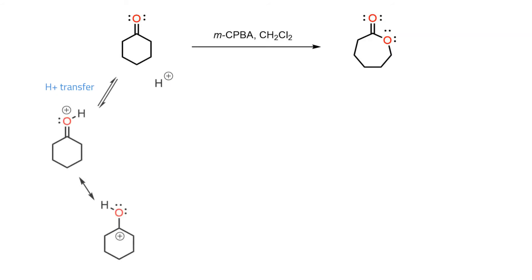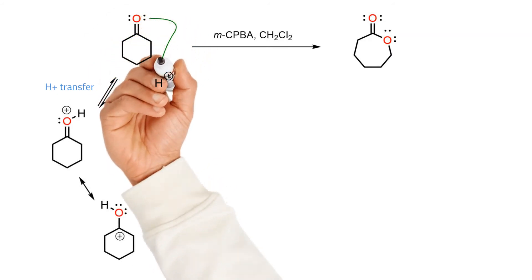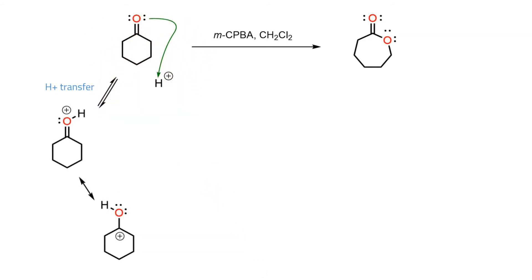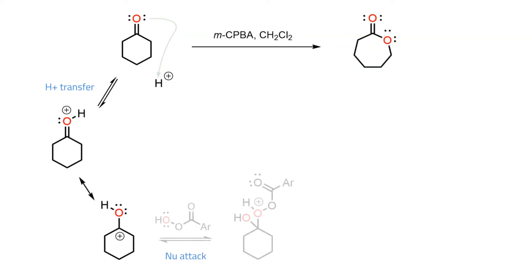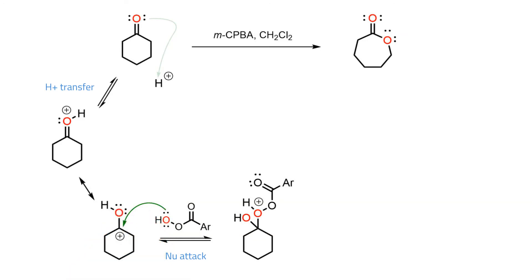Initial protonation of the ketone enhances the rate of the reaction by producing an electrophilic oxonium ion, which then picks up the peroxy acid in a nucleophilic addition step to give a hemi-acetyl-like tetrahedral product.